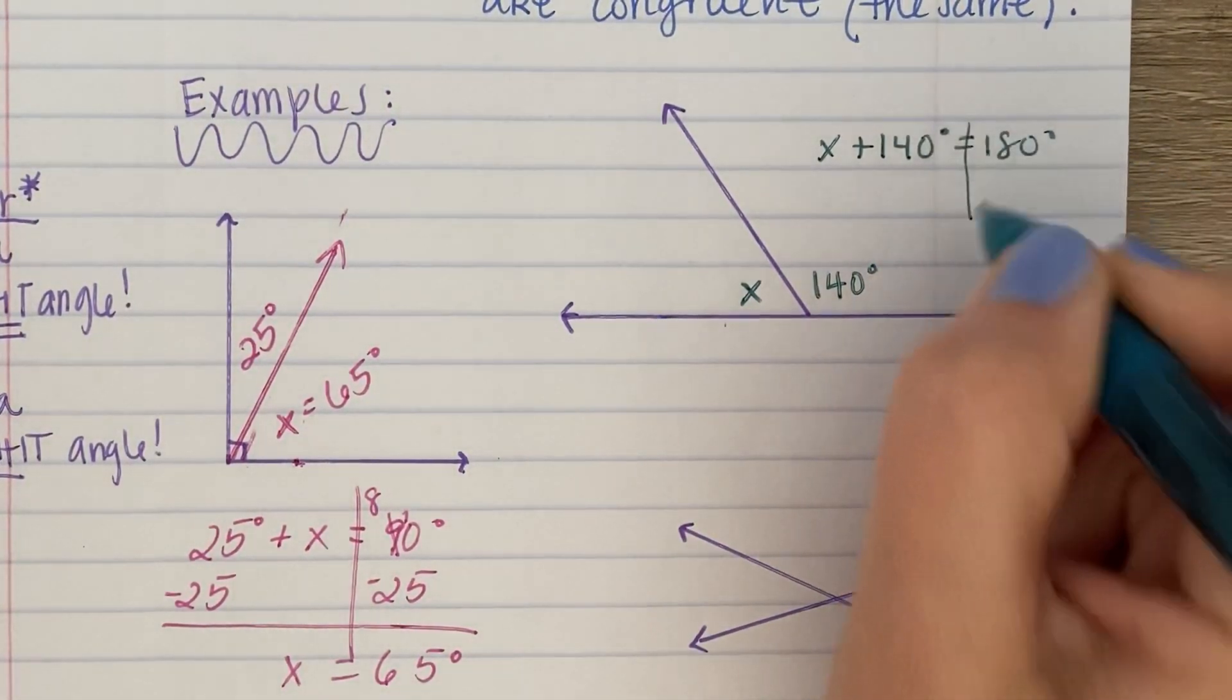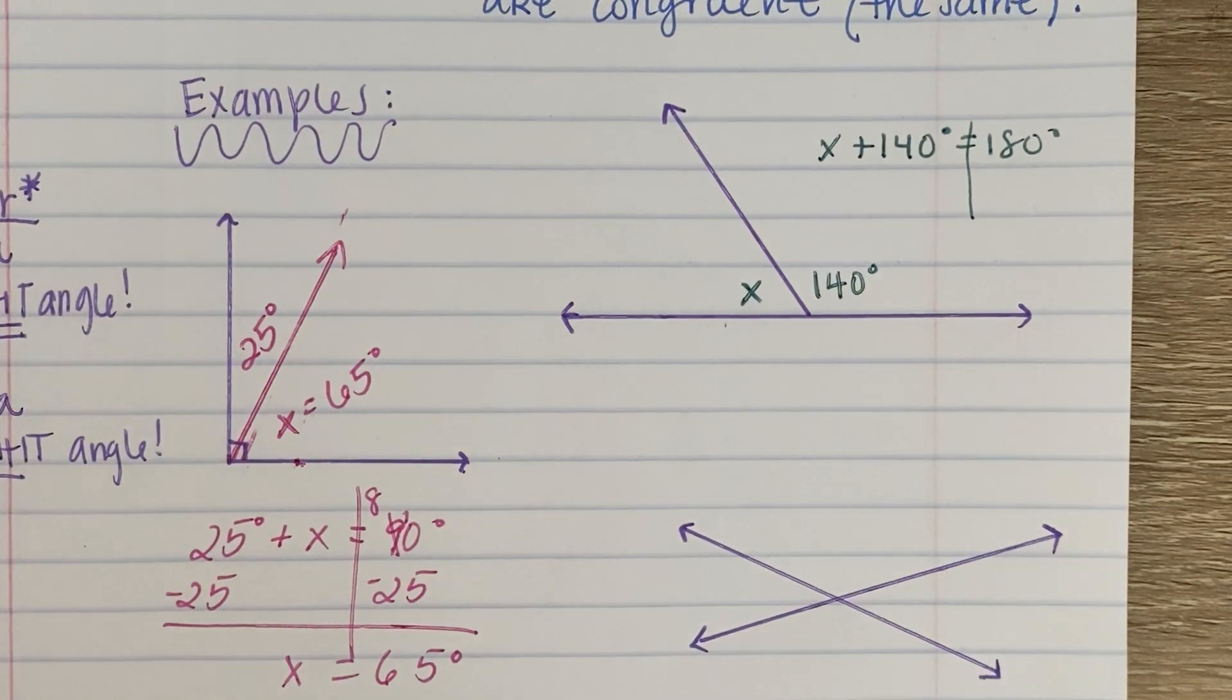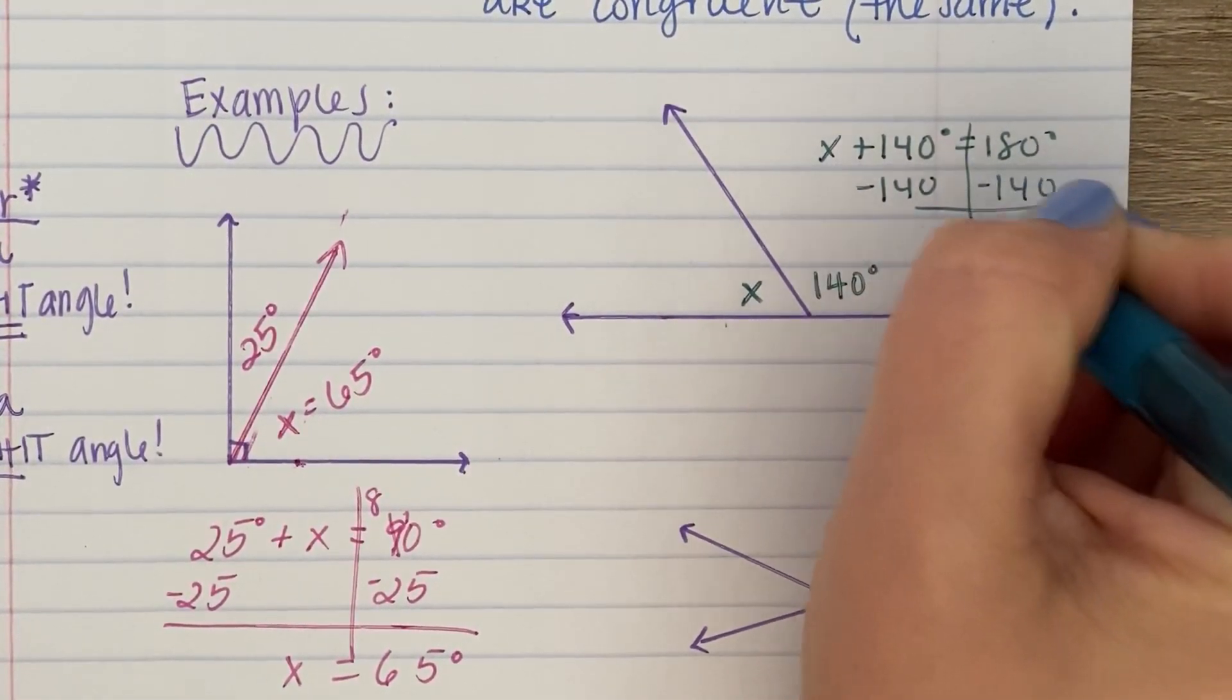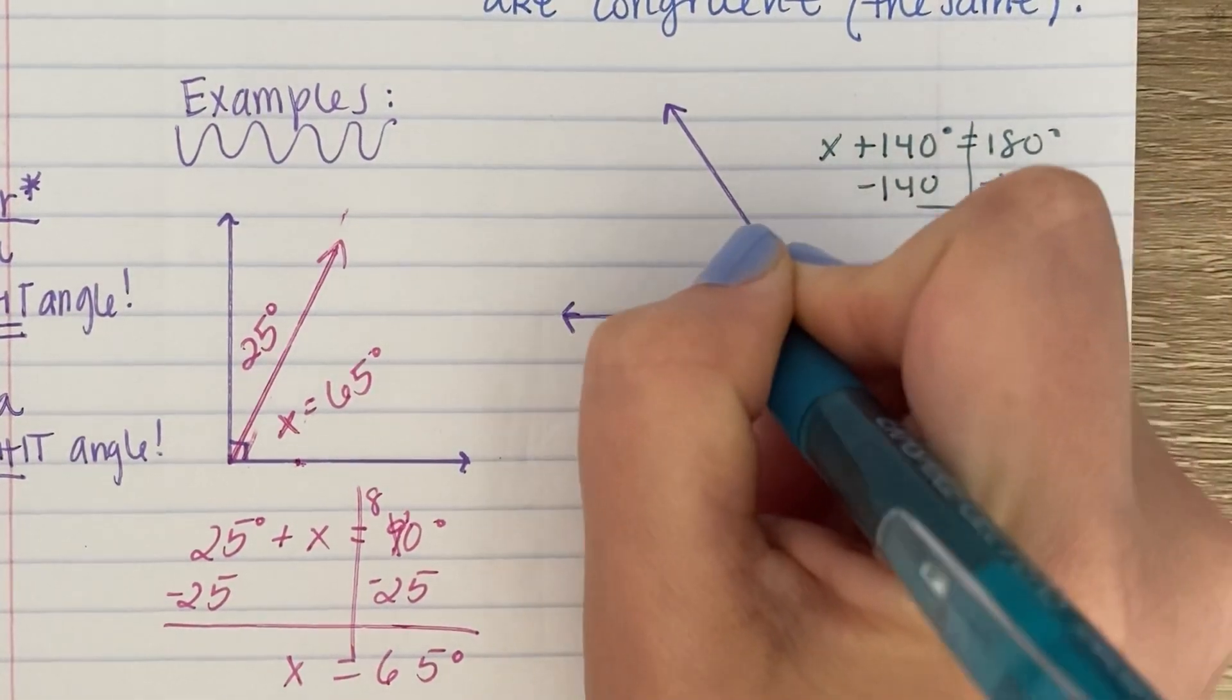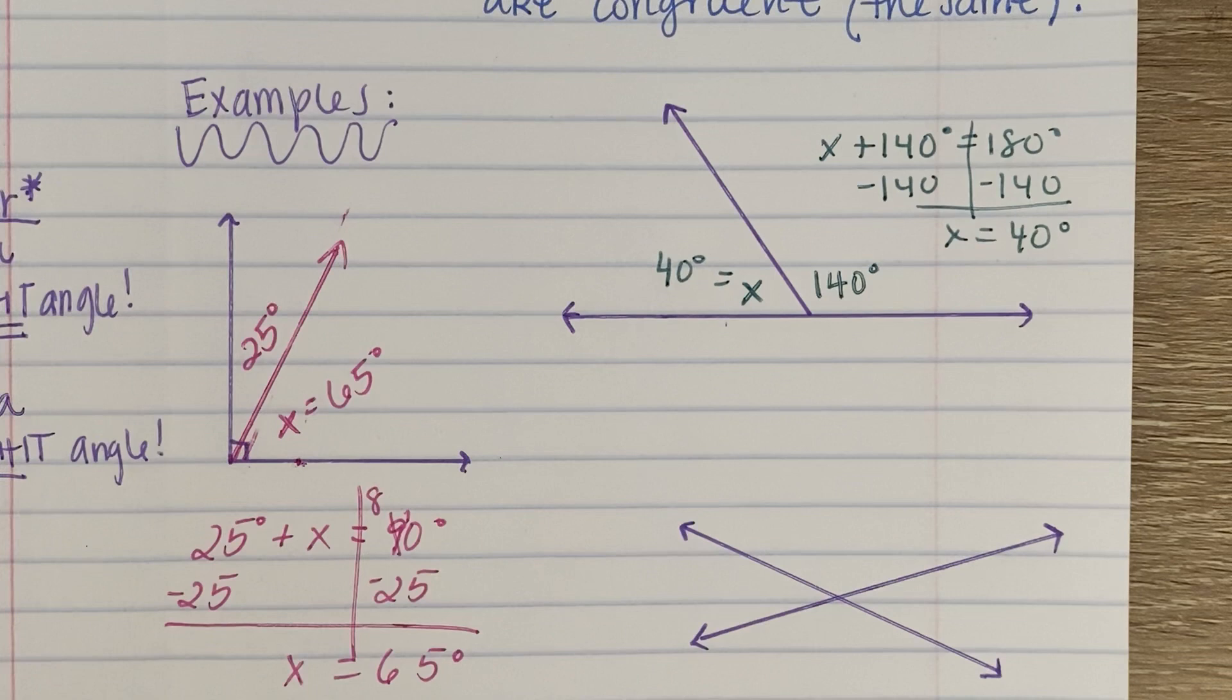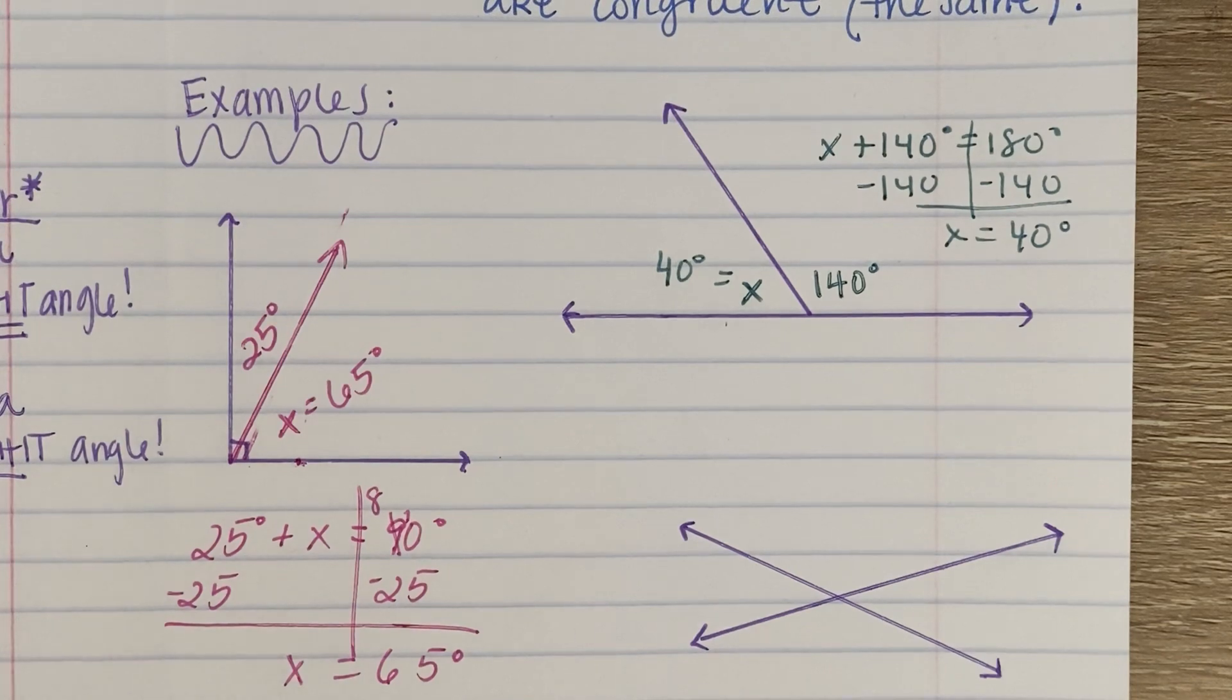So you draw the line down the equal sign. You find the side with the variable. Find the number not attached to the variable and perform the opposite operation. So we know that X is equal to 40 degrees. Or yes, you could have taken 140 and subtracted it from 180. You get the same answer. That is correct.